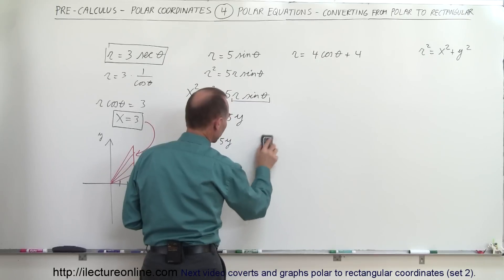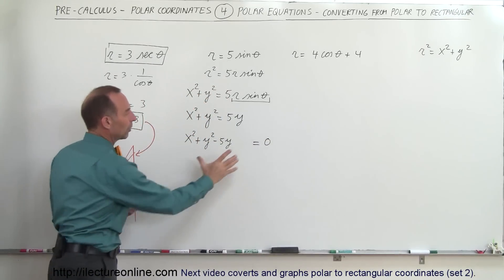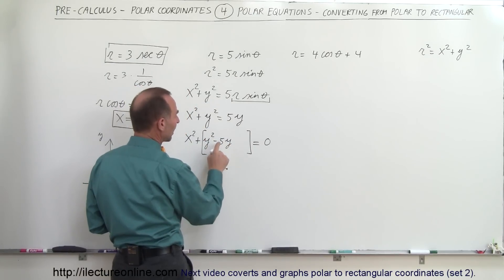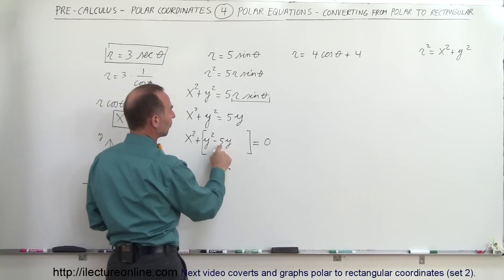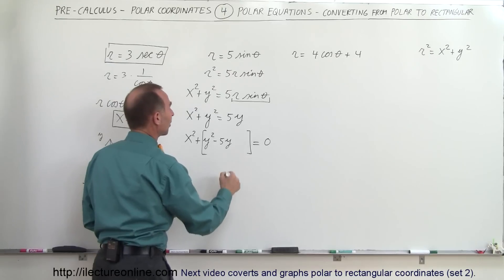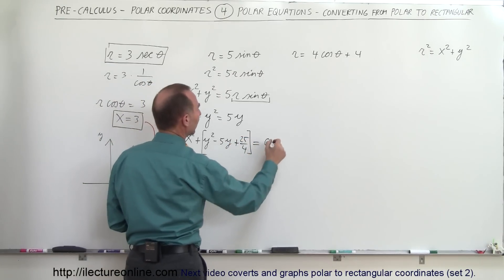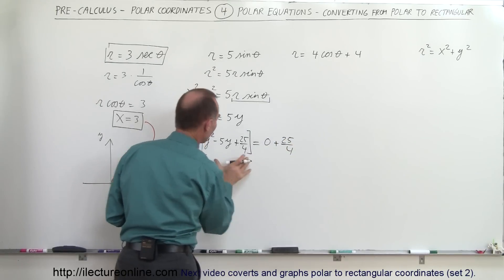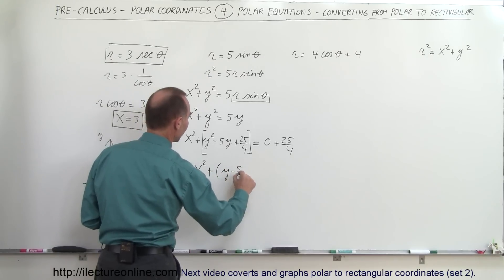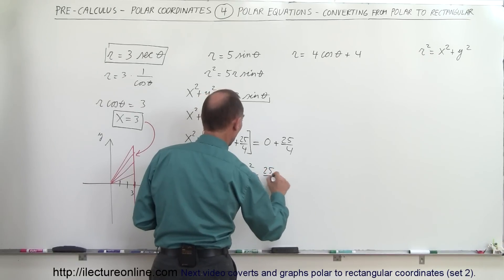Now we're going to employ the technique of completing the square on the y terms. To find the perfect square, we take half the coefficient of y — that's negative 5 divided by 2 — square it, getting 25 over 4, and add it to both sides. Since I added it to the left side, I add it to the right side as well. Now I have a perfect square, so I can write this as x squared plus the quantity y minus 5 over 2, squared, equals 25 over 4.